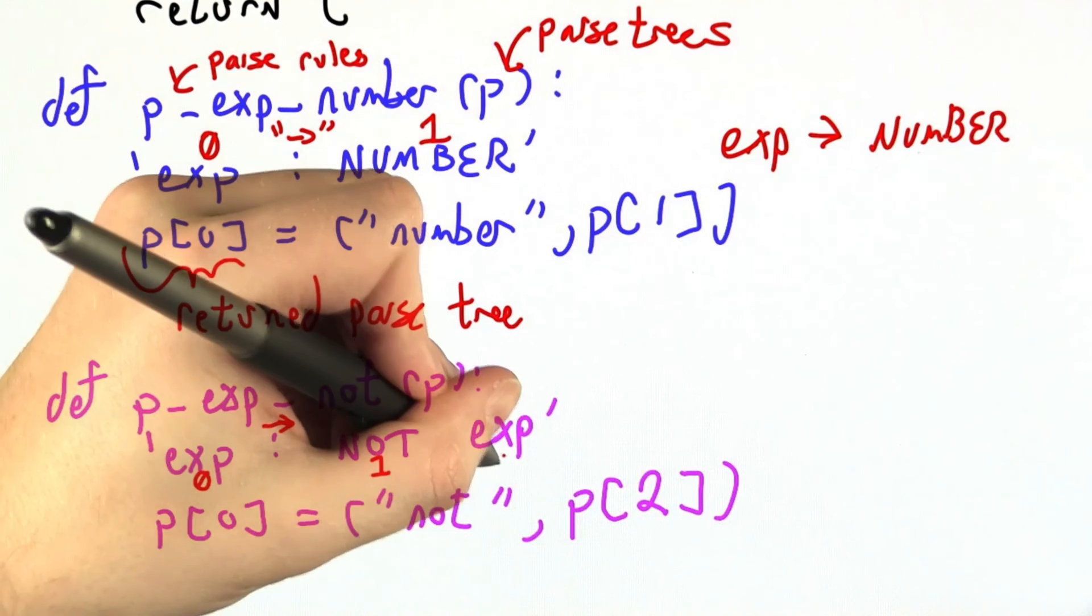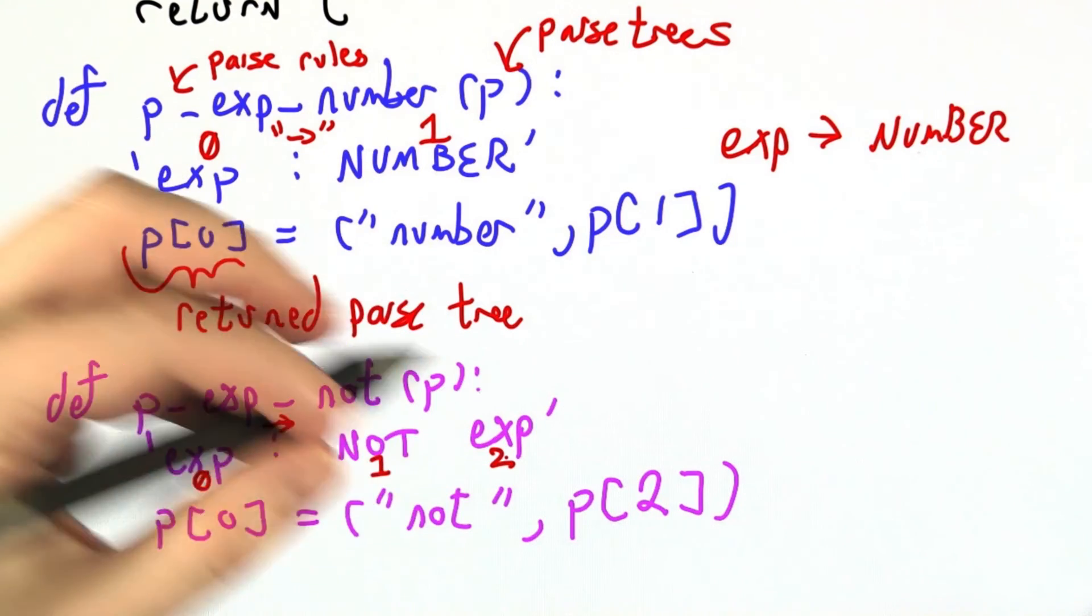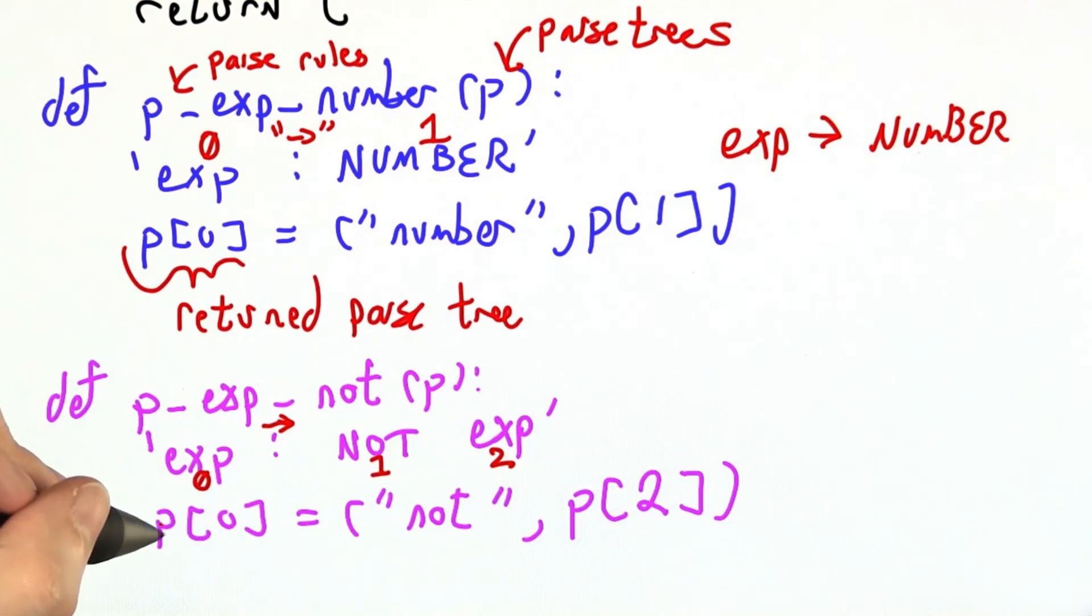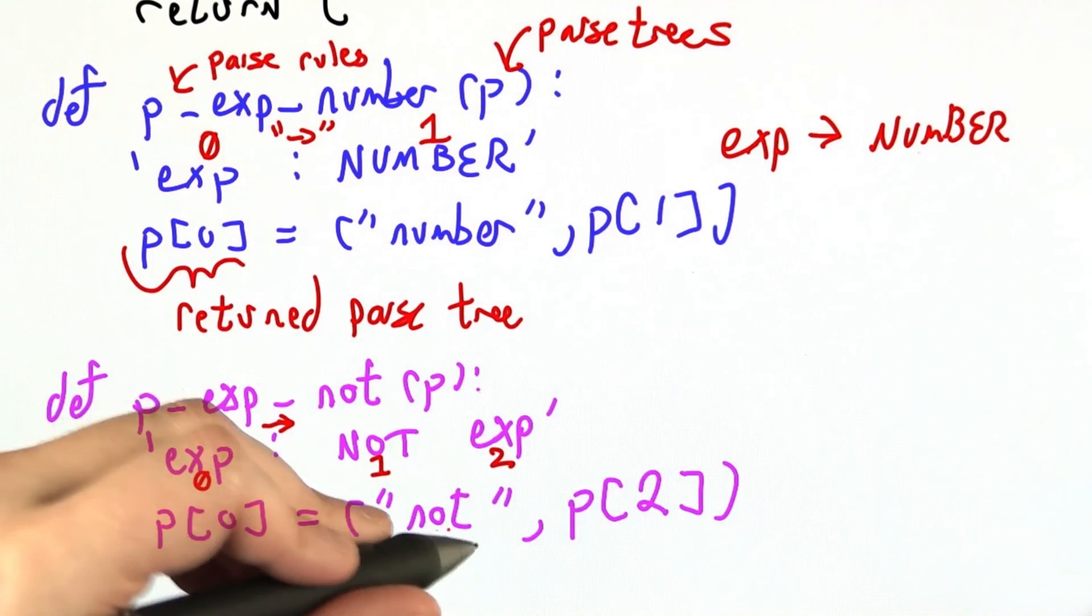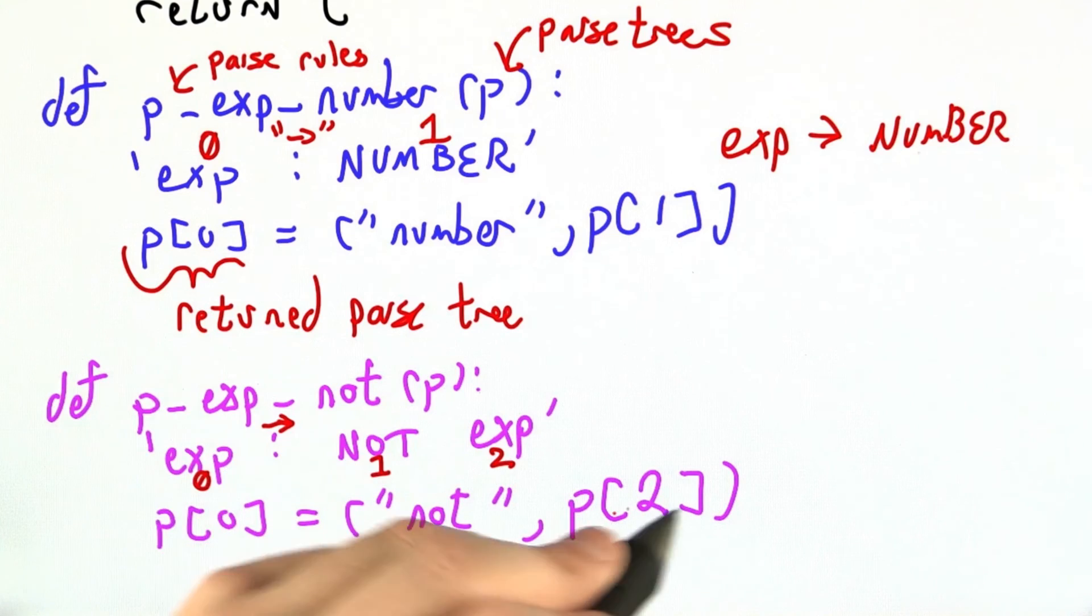This expression is number 0, this not is number 1, this expression is number 2. So we want our parse tree for number 0 to be the tuple I make by putting the word not, so that I know what it is, in front of the parse tree for number 2.